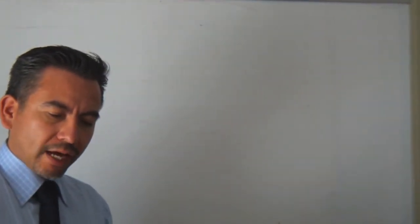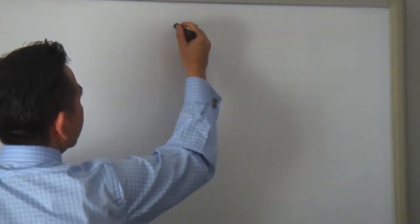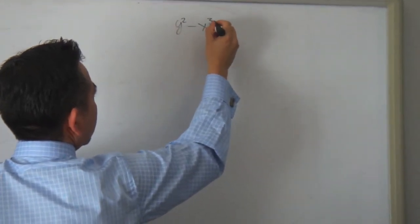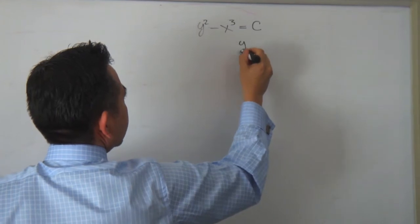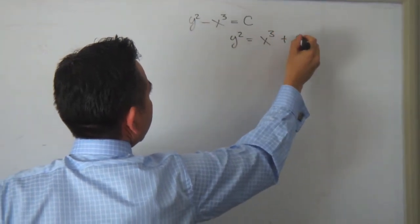I will talk about how to add two points on the elliptic curve. The elliptic curve is the difference between a square function and a cubic function equal to some constant. So we can say that the elliptic curve is equal to something like this.